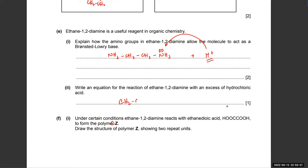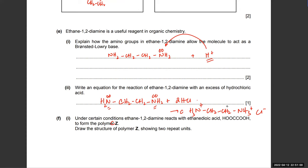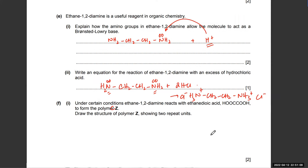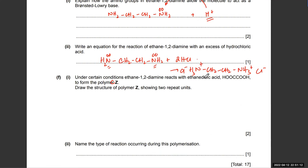Writing the equation for reaction with hydrochloric acid: CH2–CH2 with NH2 groups reacts with HCl, which provides two H⁺ ions. Each nitrogen lone pair accepts an H⁺, so the product is ⁺NH3–CH2–CH2–NH3⁺ with two Cl⁻ ions — the Cl⁻ remains unchanged as a spectator.